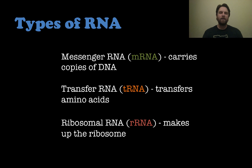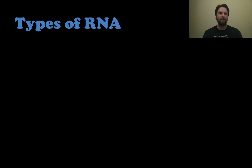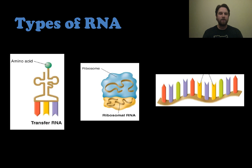The three different types of RNA we're going to talk about are: messenger RNA, which carries copies of the DNA — it carries the message from the DNA; transfer RNA, or tRNA, which transfers amino acids when we're making proteins; and ribosomal RNA, or rRNA, which makes up the structural portion of the ribosome. The tRNA actually looks like a little T, and the messenger RNA is just a single strand that we get from the DNA.